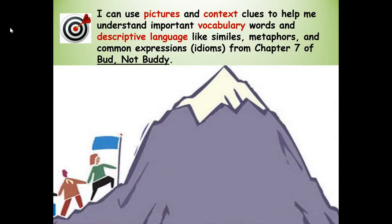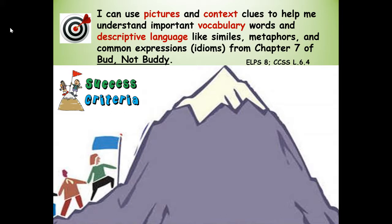Our learning target is: I can use pictures and context clues to help me understand important vocabulary words and descriptive language like similes, metaphors, and common expressions — idioms — from Chapter 7 of Bud, Not Buddy. Success criteria — that means how will you know you're successful at using pictures and context clues to help you understand important vocabulary?